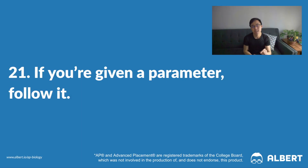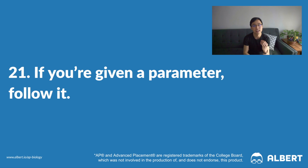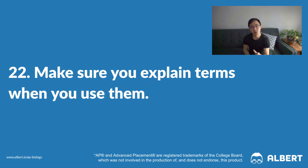Tip number 21: if you're given a parameter, follow it. Just stop once you answer the question. When questions ask you to state something in a sentence or two, you should not write four sentences. Follow the directions and show that you can craft the response they are looking for in the allotted space. Tip 22: make sure you explain terms when you use them. Never assume that your grader knows anything about AP Biology — the best way to show mastery is to explain a concept to somebody. Tip 23: make sure you use a black or blue ink pen, as it makes it a lot easier for graders to read your responses.